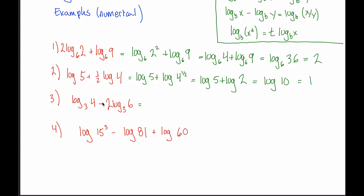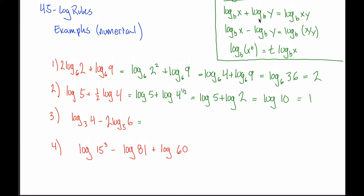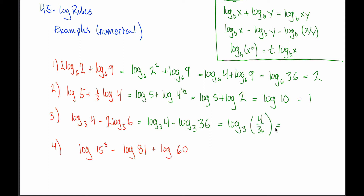This third example is pretty similar, except instead of adding two terms we're subtracting, so we'll think about the second log rule instead of the first. But just like the first two examples, we can't immediately apply that rule because of the coefficient. Using the third log rule to take care of the coefficient, we rewrite this as log base 3 of 4 minus log base 3 of 36 — that 36 comes from moving the 2 up into the exponent: 6 squared equals 36. Now using the second log rule, we combine into log base 3 of 4 divided by 36, which reduces to 1 over 9. This asks what power raises 3 to equal one ninth: since 3 squared is 9, then 3 to the negative 2 equals one ninth. So log base 3 of one ninth is negative 2.